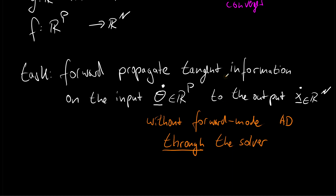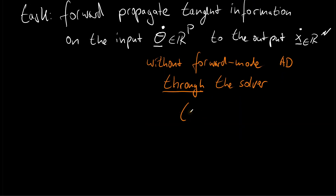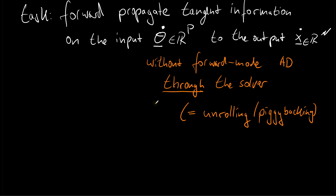By 'through the solver' I mean that the Newton-Raphson scheme is an iterative algorithm composed of small computational operations on which we could apply our forward mode AD engine — and that's not what we want to do. This approach is also called unrolling, because you unroll the iterations of the solver, or piggybacking, because alongside the primal computation you carry the tangent computation. It must be said this is an alternative approach; we could differentiate through the solver, but sometimes this is not even possible because numerical operations call into low-level libraries that are not within the differentiable framework, for instance not written in JAX or TensorFlow. So we have to provide this kind of custom propagation rule.